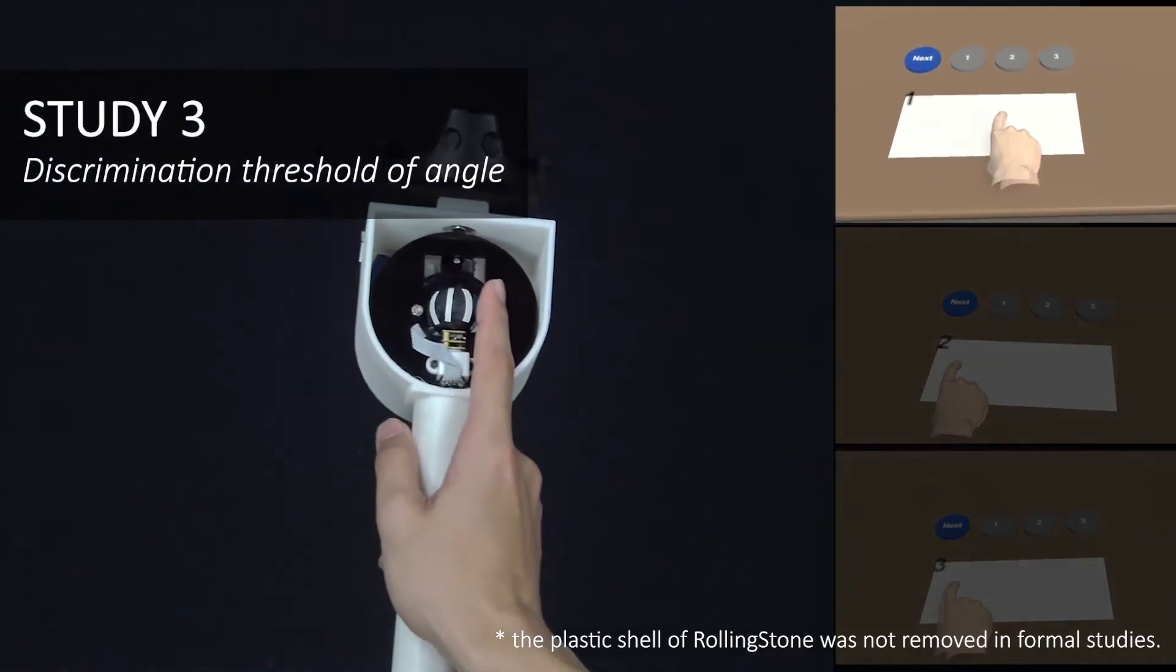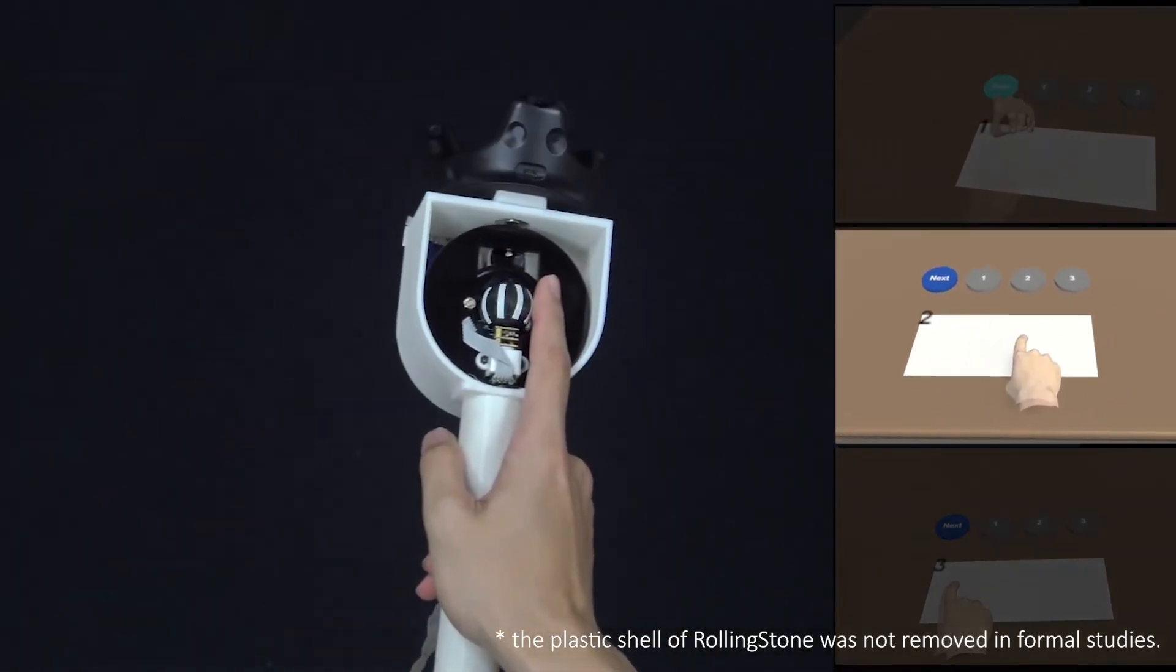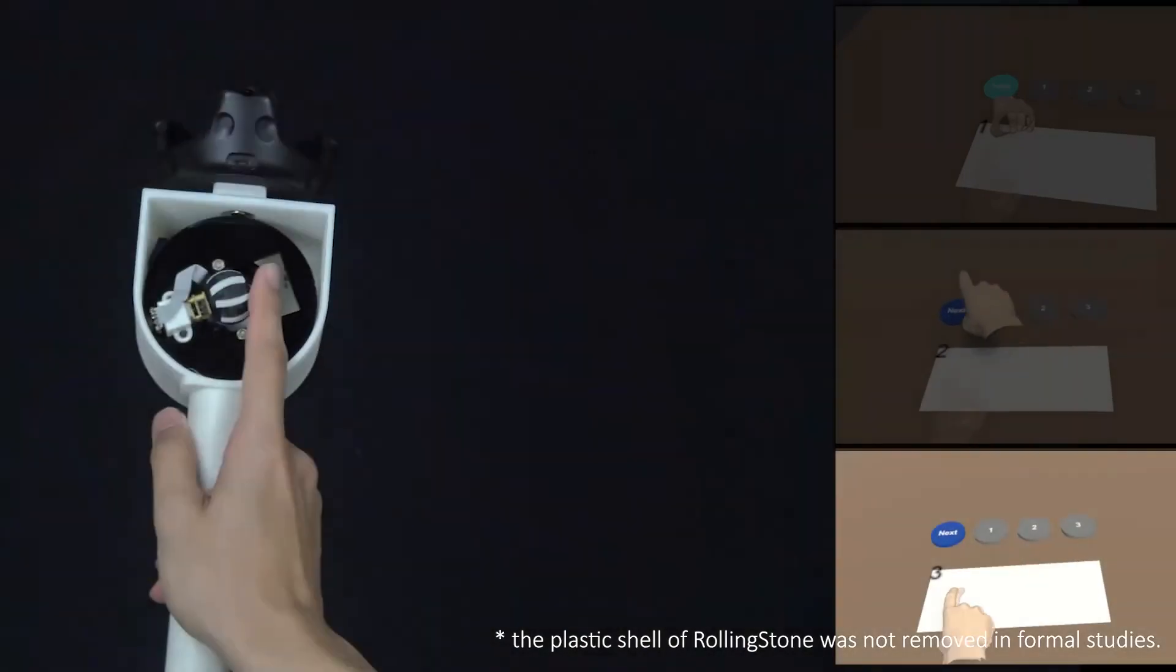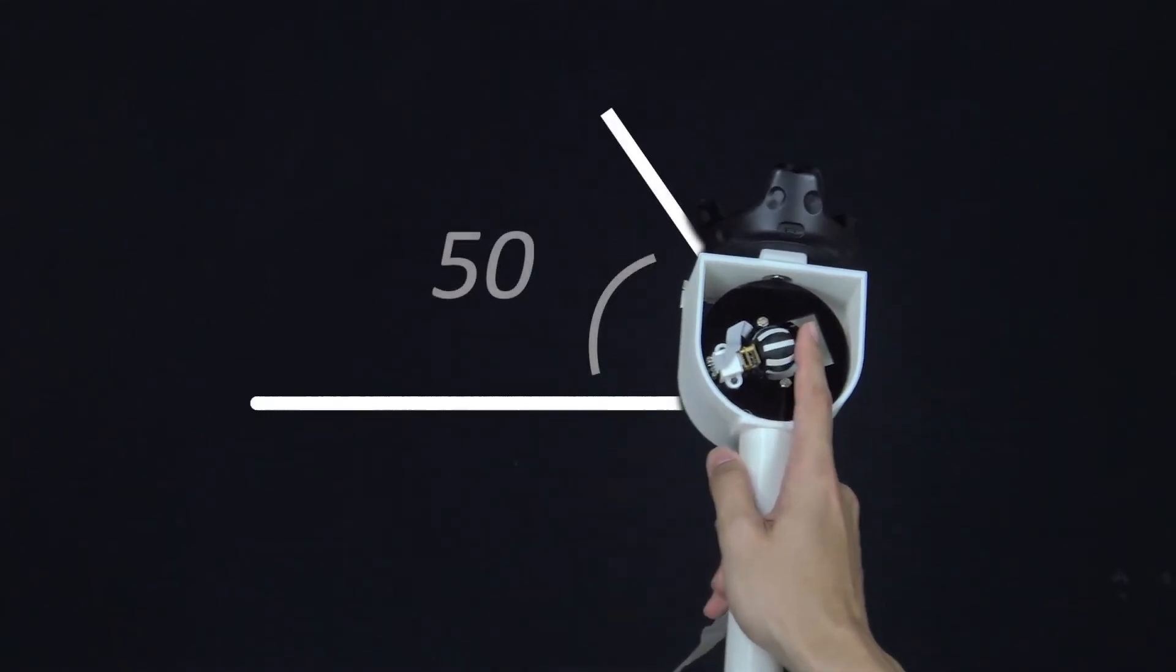In study three, we explored the discrimination threshold of the angle between the hand motion and the slip direction. The results suggest that the change in the slip angle could be modified until the relative slip angle between the ball and the finger movement exceeds 50 degrees.